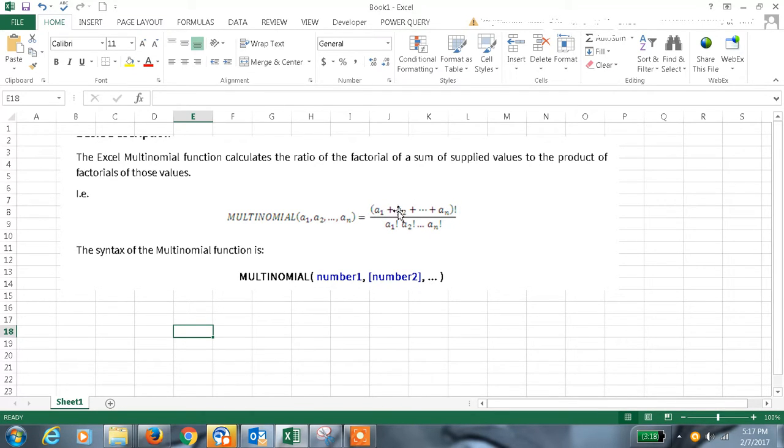The Excel MULTINOMIAL function calculates the ratio of the factorial of sum of supplied values to the product of the factorial of those values. You are seeing the first instance of factorial of sum of supplied values.